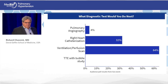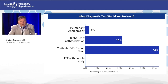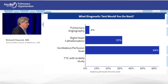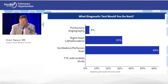Most of the audience picked VQ scan, and some picked right heart cath. Vic agrees with the audience — even with CT already showing what looks like clot, a VQ scan is warranted. The key value is seeing what the perfusion looks like. If the perfusion scan is normal, that really helps because it argues against CTEPH. A normal VQ scan — even with eccentric lining clot on CT — means this is not CTEPH.